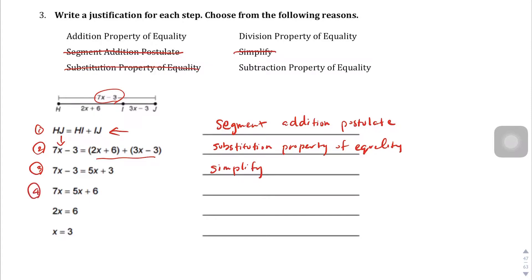Step 4, what do we do here? It looks like we added 3 to both sides. So this is the addition property of equality. And then from step 4 to step 5, what happened there? Looks like we subtracted 5x from both sides. So this is the subtraction property of equality.